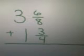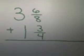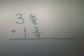Three and six-eighths plus one and three-fourths. Since both denominators were different, you had to find a common denominator.